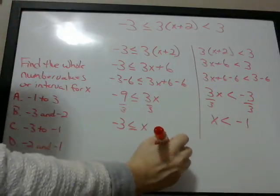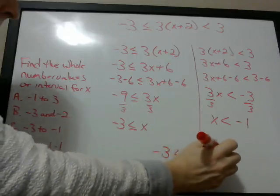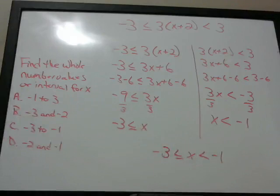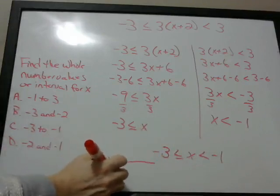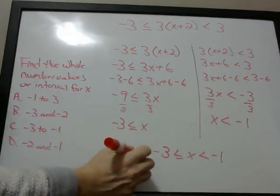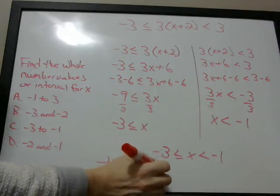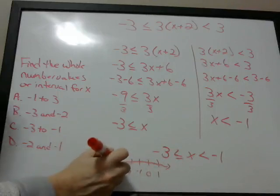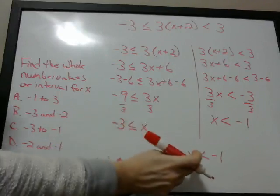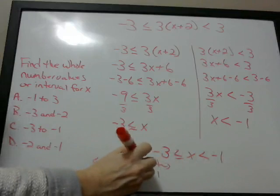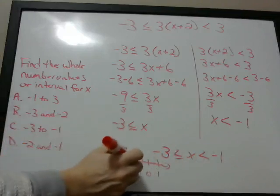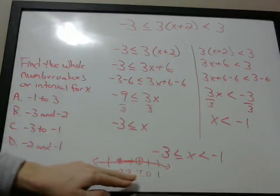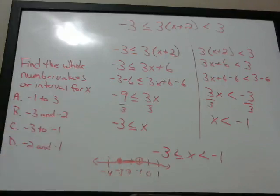So if we put this all together, we have x is greater than or equal to negative 3 and x is less than negative 1. If we look at a number line — negative 4, negative 3, negative 2, negative 1, 0, 1 — it says x is greater than or equal to negative 3, so that's a solid dot we put there. And it's less than negative 1, so it's not equal to negative 1, so we put an open circle there. So x can equal any of the numbers between negative 3 (inclusive) and negative 1 (exclusive).